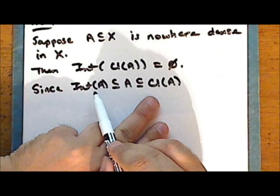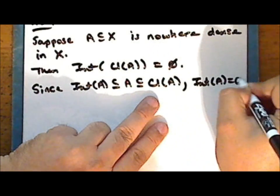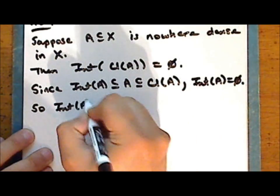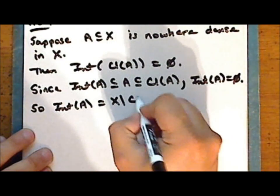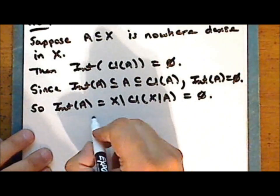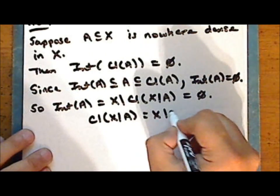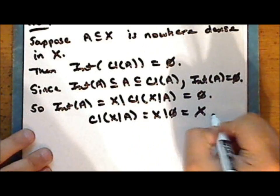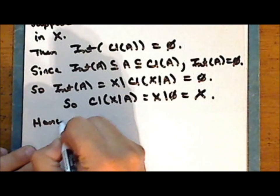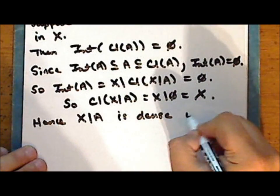So there are no non-empty open sets contained in the closure of A, and so the interior of A must be empty. And so the interior of A — which is the same as the complement of the closure of the complement of A — is empty. And so we have that the closure of the complement of A is the complement of the empty set, which is the entire set. And hence the complement of A is dense in the space.